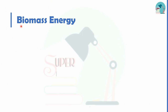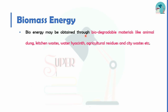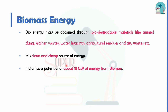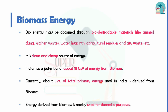Next, we have biomass energy. Biomass energy is obtained from biodegradable materials such as animal dung and kitchen waste. This is a clean and cheap source of energy, generating about 18 gigawatts of energy. Biomass accounts for 32% of total primary energy in India and is used mainly for domestic purposes.